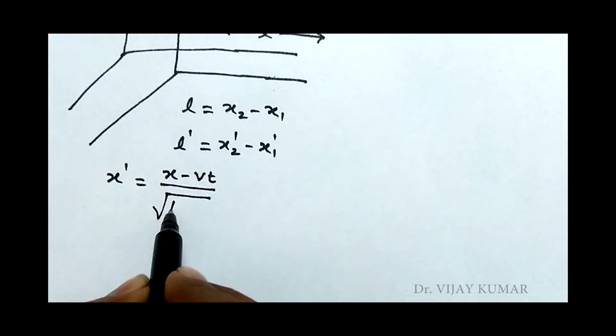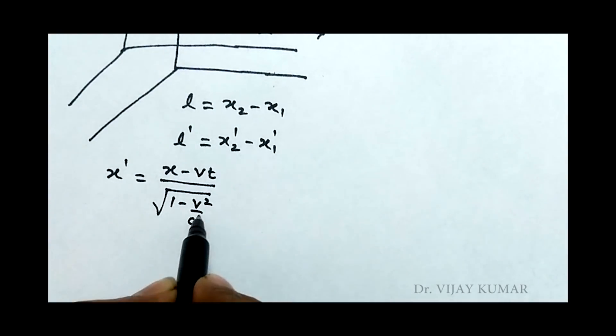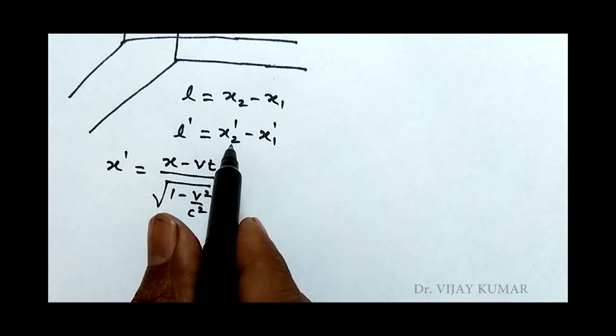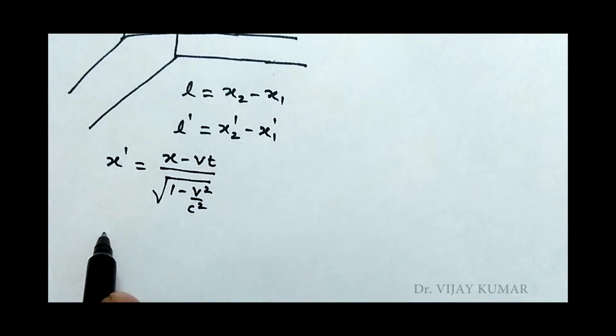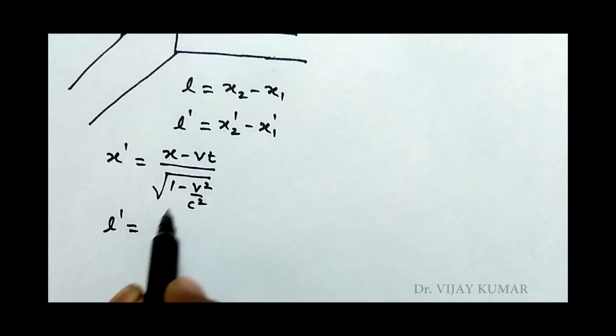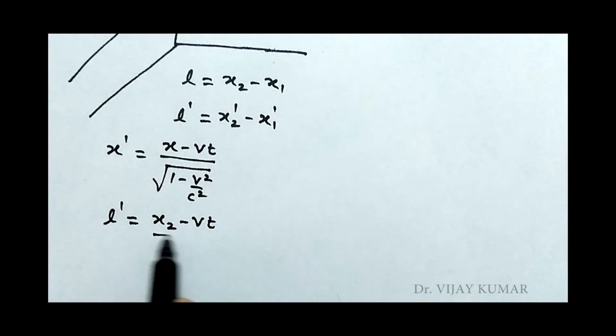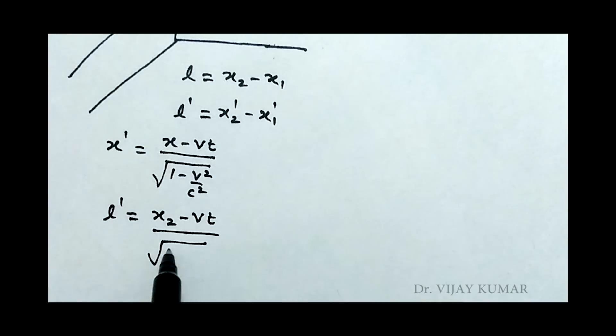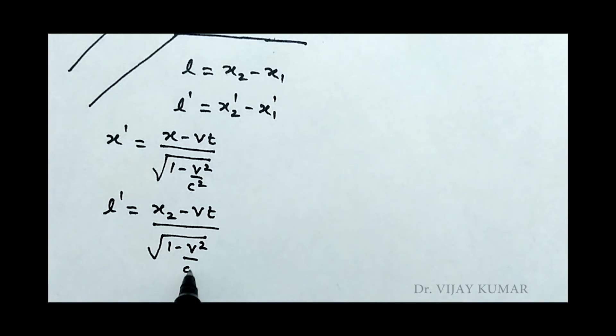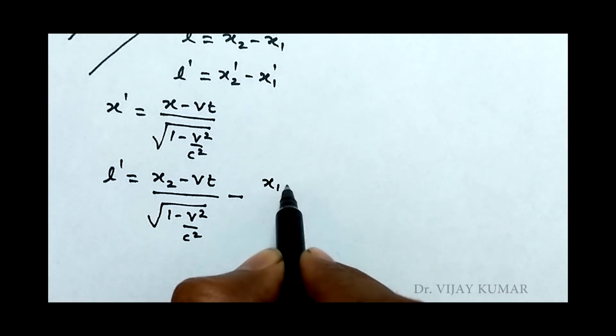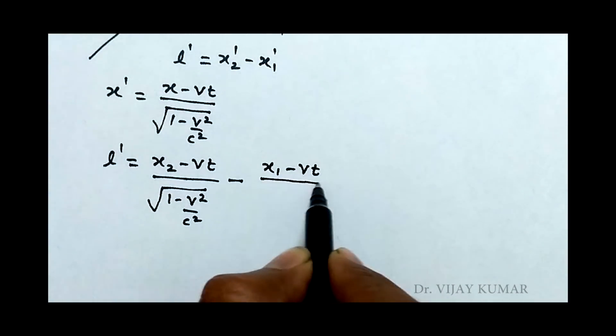Put the value of x' in this equation, and L' becomes x2' means x2 minus vt upon square root of 1 minus v² upon c², minus x1' which is x1 minus vt upon square root of 1 minus v² upon c².